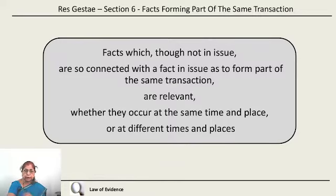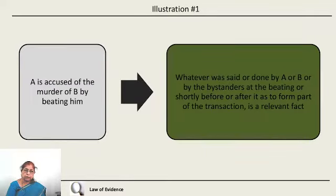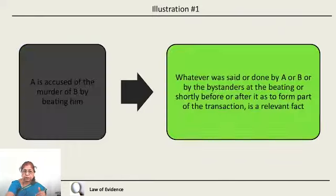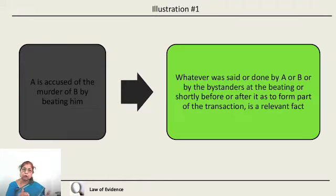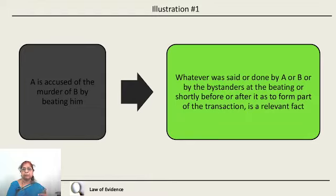This is the principle of Res Gestae. For example, A is accused of the murder of B by beating him. Whatever was said or done by A, B, or by the bystanders at the time of the beating, or shortly before or shortly after the beating — all these facts form part of the same transaction and therefore are relevant facts according to Section 6.